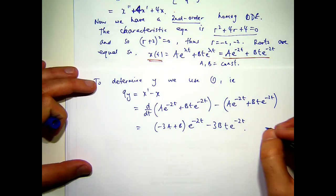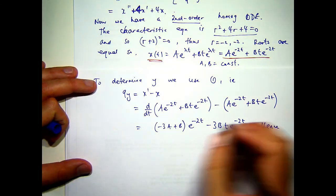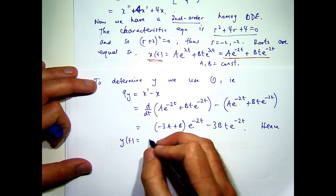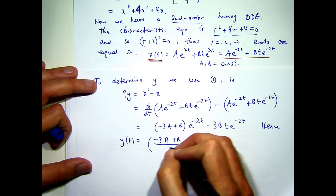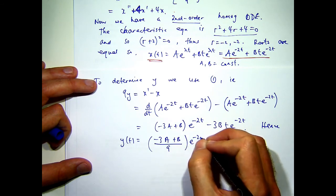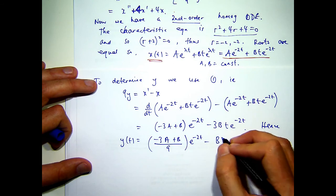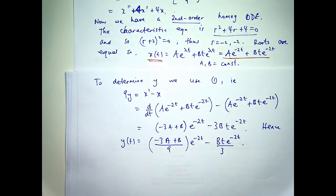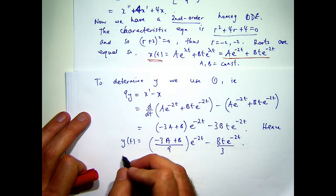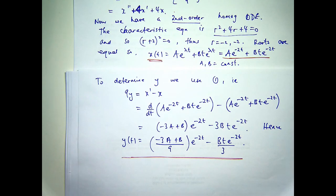And there I've got my solution, my general solution for y. Now, note that I've got the y in terms of the general constants that appeared in x. The a's and the b's.